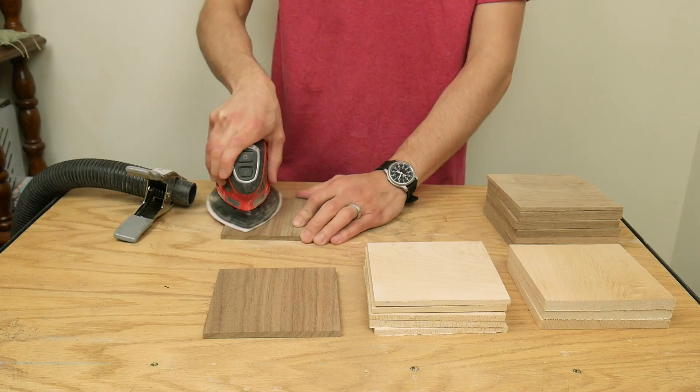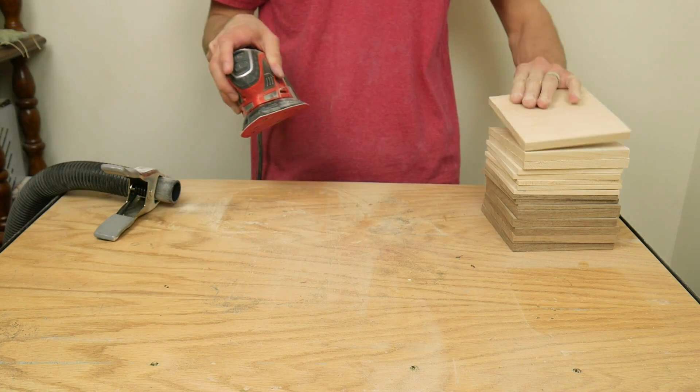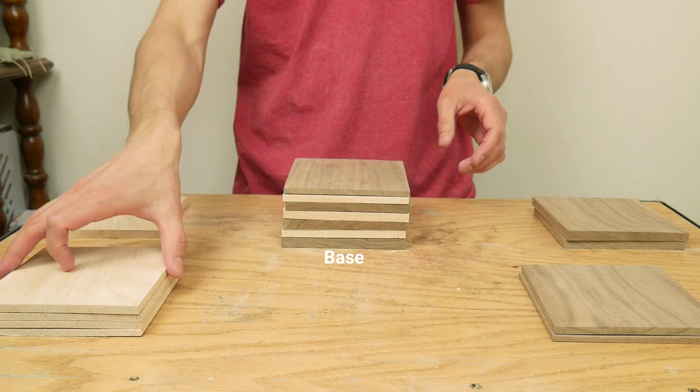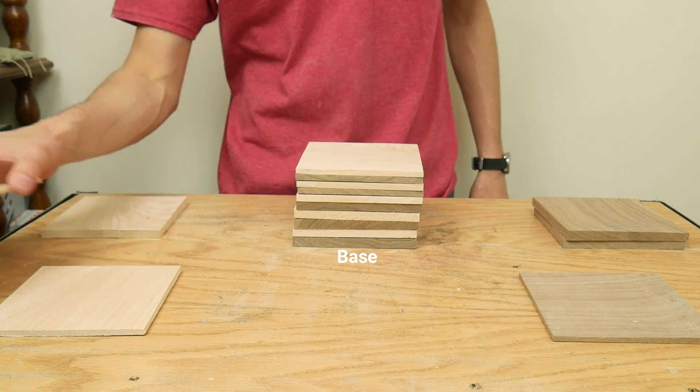I sanded the top and bottom of each of these to remove the saw marks. I arranged the squares into a nice pattern, one for the base of the lamp, and one for the top of the lamp.